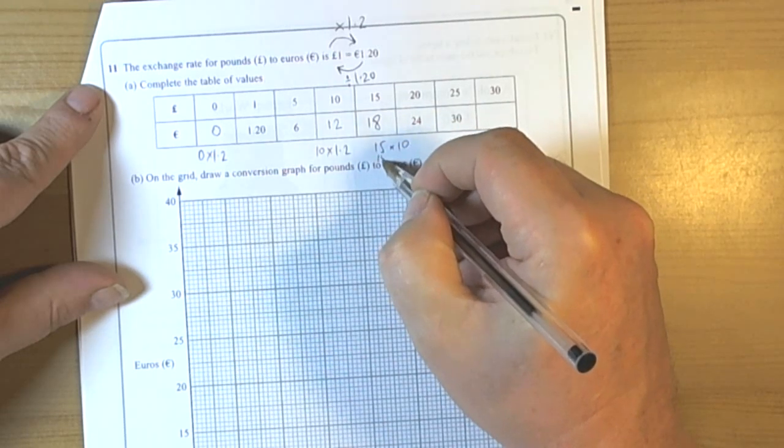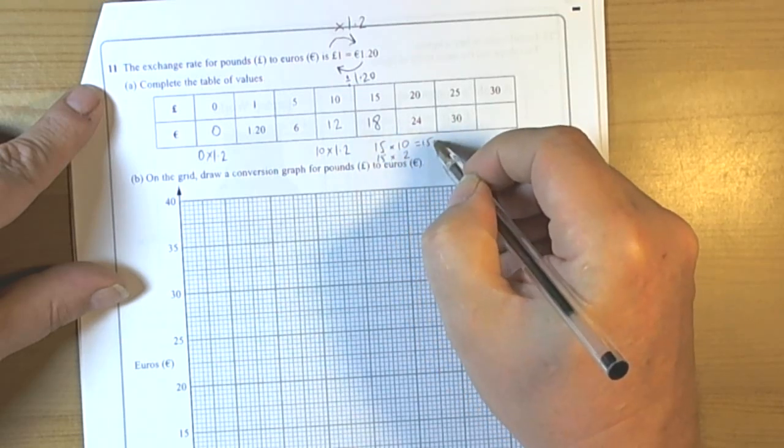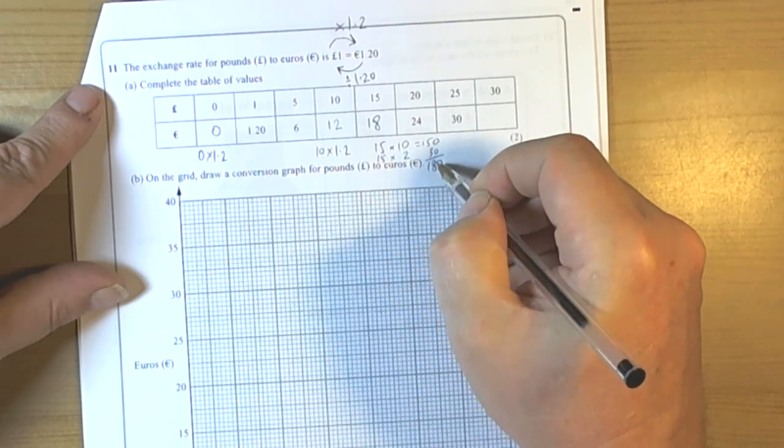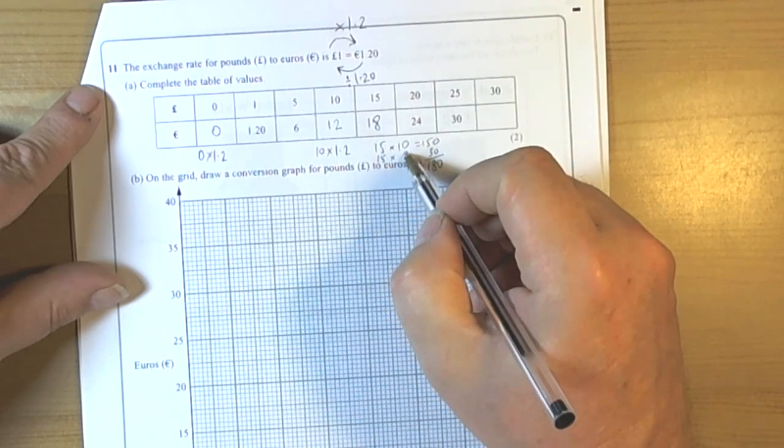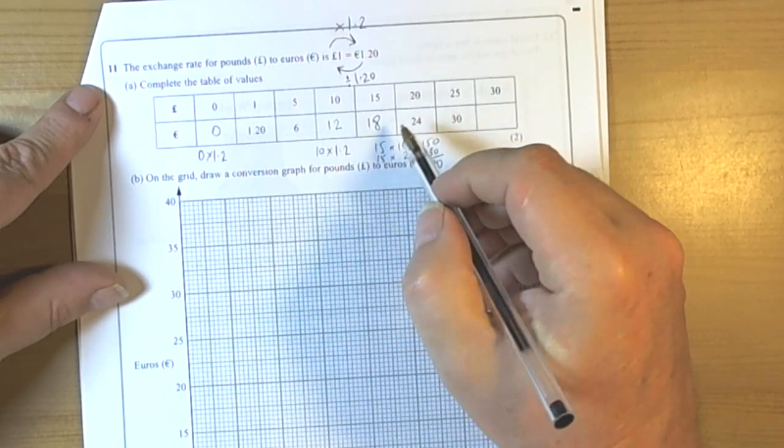And if you're not sure of that then sometimes 15 times 12 helps. So 15 times 10, 15 times 2. So 150, 15 to 30, 180. But we dealt with 12 rather than 1.2, so we moved this down one place value to become 18.